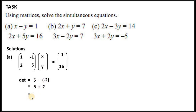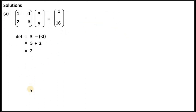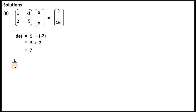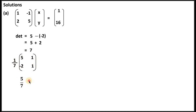After finding the determinant of 7, the next step is to find the inverse. The inverse is 1 over 7 multiplied by the adjusted matrix: you swap the main diagonal elements (5 goes to the top-left, 1 comes to the bottom-right) and change the signs of the off-diagonal elements (negative 2 becomes positive, positive 1 becomes negative). Multiplying through gives: 5/7, 1/7, negative 2/7, 1/7 — this is the inverse matrix.